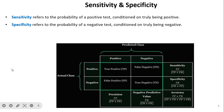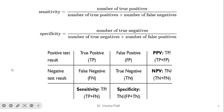Sensitivity is the number of true positives divided by the number of true positives plus the number of false negatives — that is TP divided by TP plus FN. Specificity is TN divided by FP plus TN. We generally never use accuracy in information retrieval.